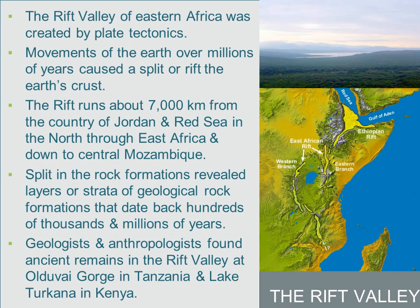The movement of the earth over millions of years ago caused a split in the earth's crust. The interior of the earth is divided into three major layers: the crust — on which we reside — then the mantle, and then the outer and inner core. We reside on the crust region. When there are movements in the crust underneath, they lead to changes in landforms. This split and the resulting changes are still visible in this region of Africa today.